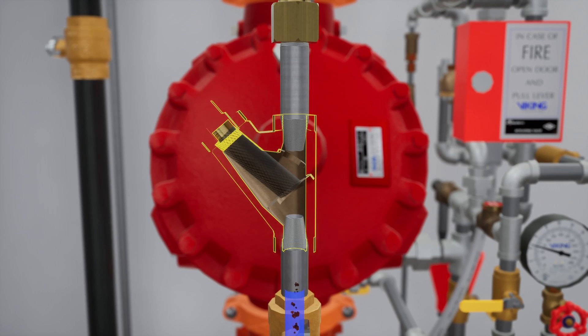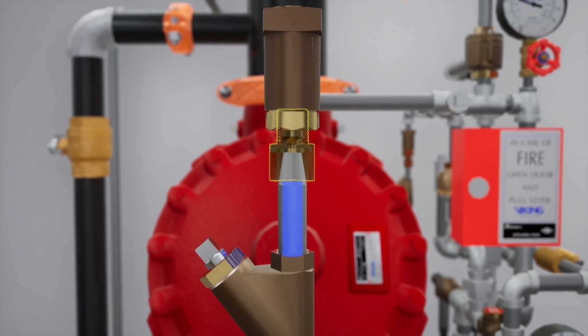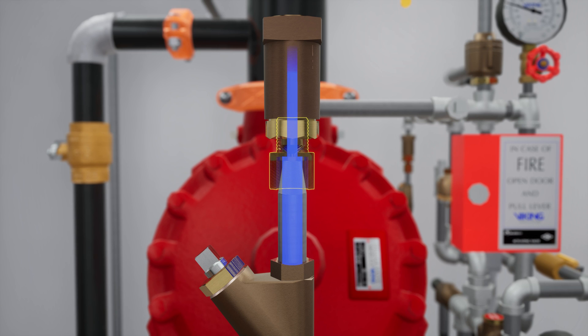The Y strainer keeps debris from entering the restricted orifice. The restricted orifice reduces the rate at which water can enter the prime chamber, ensuring that prime water will drain faster than it can be supplied.